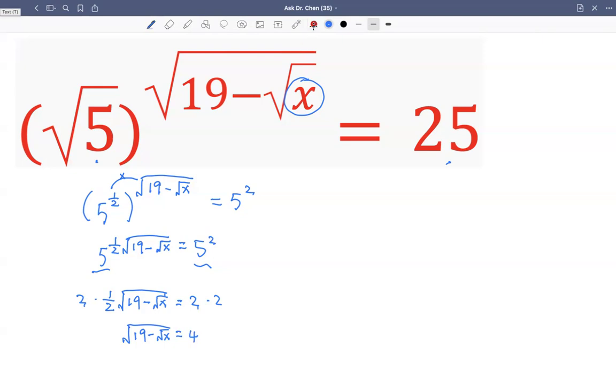Then we square both sides, right, to get rid of the square root sign. So we get 19 minus square root of x equals to 4 squared, 16.